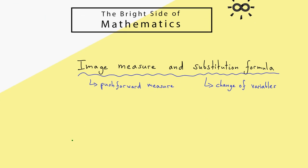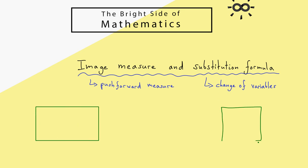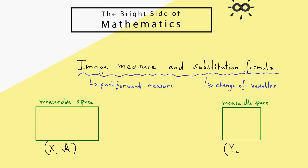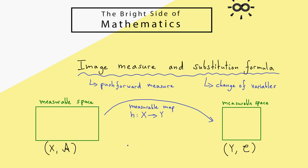Let's start with the image measure. In order to explain it we will need a short sketch. We have one measurable space on the left and another one on the right. This means we have one set X together with a sigma algebra, which I call A, on the left hand side. And we have a set Y with another sigma algebra, which I call C, on the right hand side. At this point you already know what a measurable map between two measurable spaces is, and that is what we also need here. This map is denoted by h. We haven't introduced measures yet, but we will start now. The overall idea is that we only have a measure on the left hand side and not on the right hand side. This measure on X we will denote by mu.